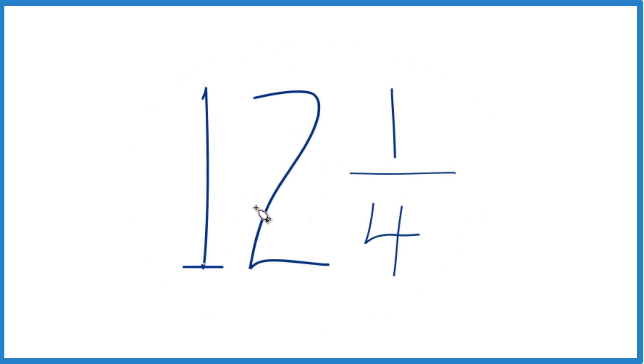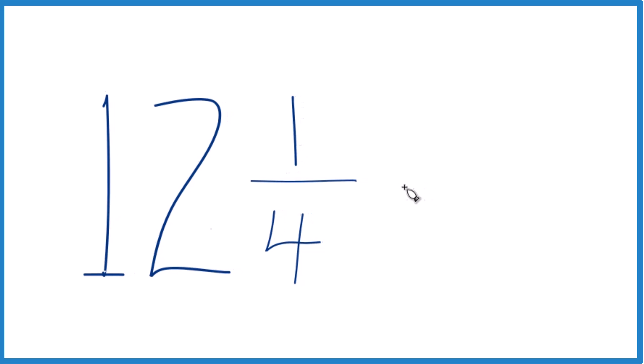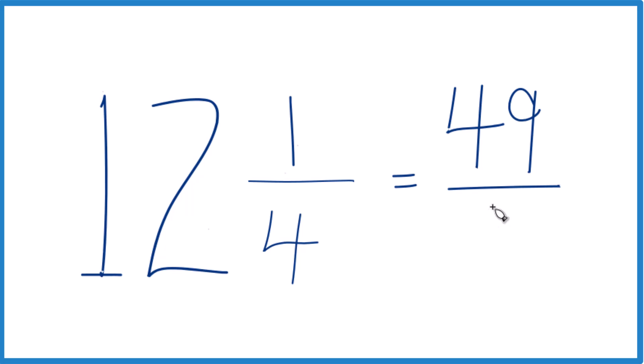You take the whole number, 12, multiply that by 4. So 12 times 4 is 48, and then you add the 1. So 48 plus 1 is 49, and then you just bring the 4 across here.